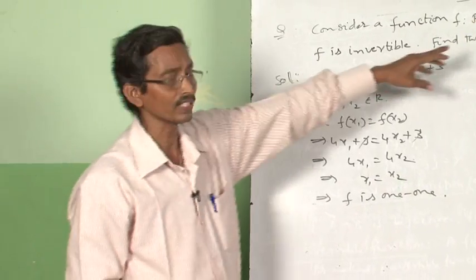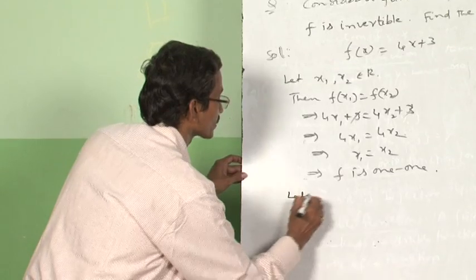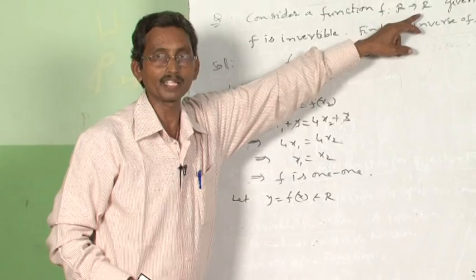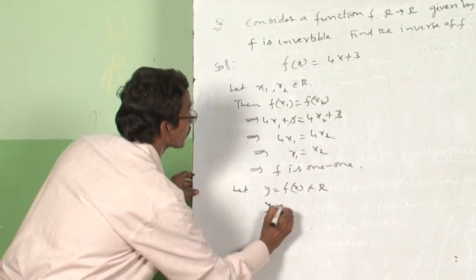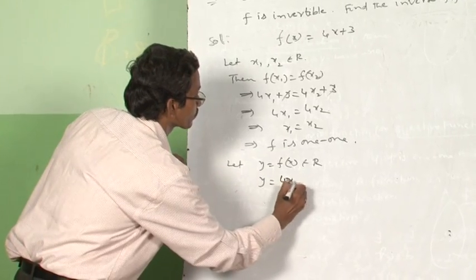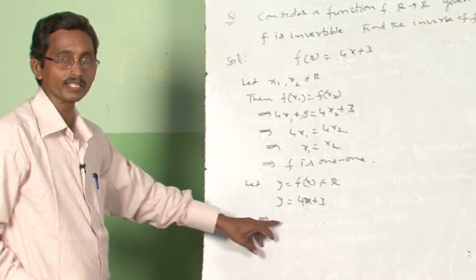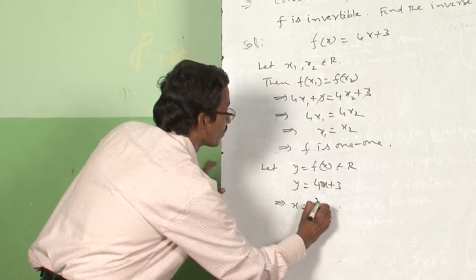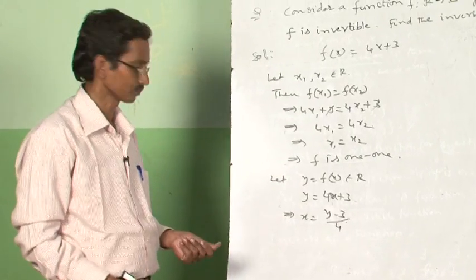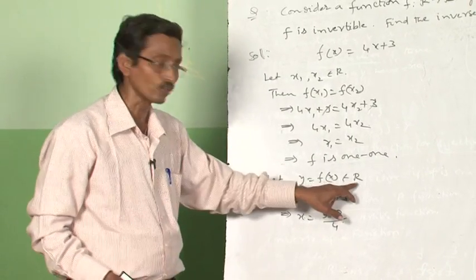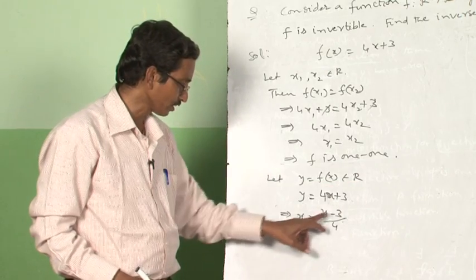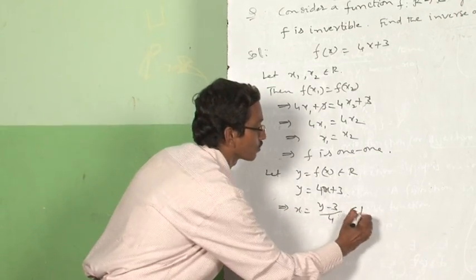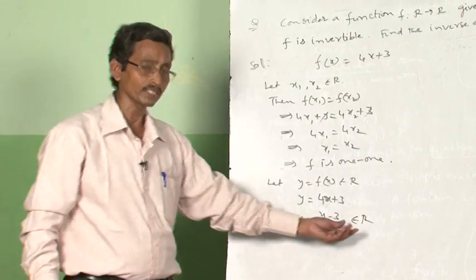Now we have to show that the function is onto. Let y = F(x) belong to the co-domain. The co-domain is also the set of real numbers. So y = 4x + 3. From this, we calculate x = (y − 3)/4. We assumed y belongs to the co-domain. So is (y − 3) in ℝ? Yes, it belongs to ℝ, and (y − 3)/4 also belongs to ℝ since ℝ is the set of real numbers.